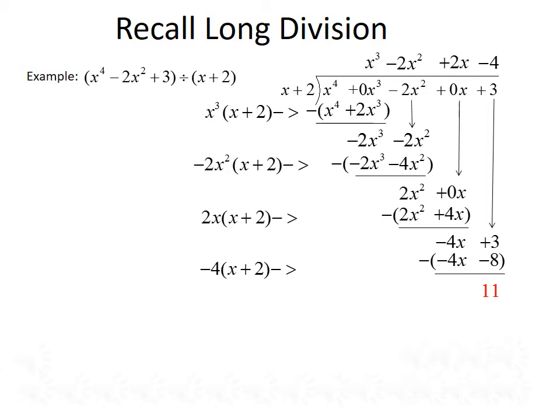We have a quotient of x cubed minus 2x squared plus 2x minus 4 with a remainder of 11. Sometimes we'll be asked to write our answer in a special form: dividend equals divisor times quotient plus remainder. So x to the fourth minus 2x squared plus 3 equals x plus 2 times x cubed minus 2x squared plus 2x minus 4, plus 11.